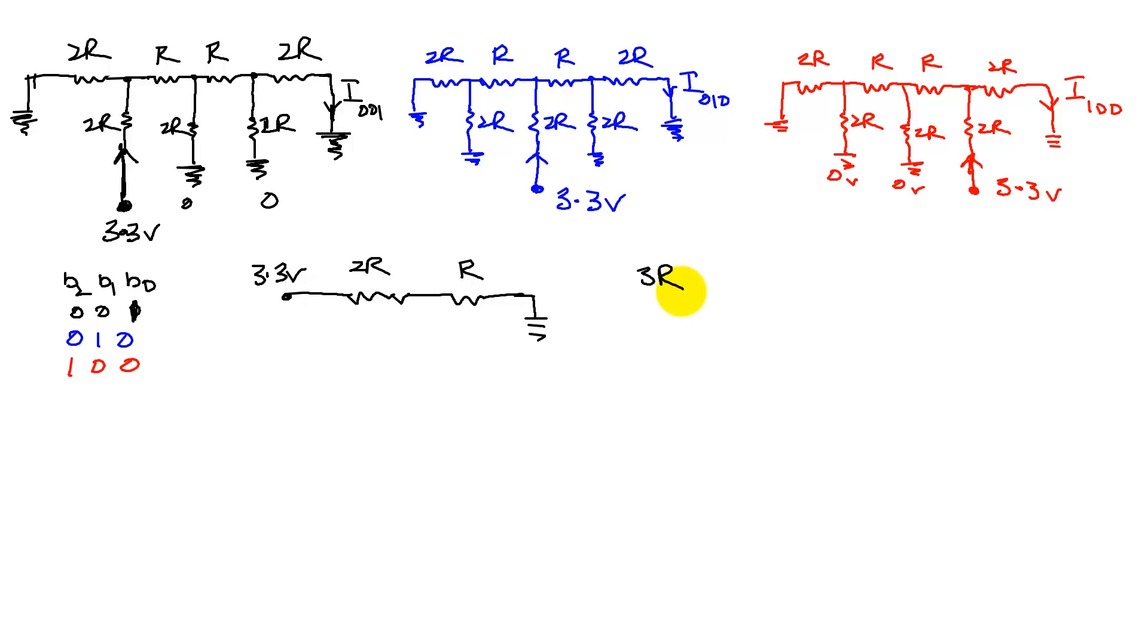It's just a matter of combining them based on what you already know about series and parallel resistors. So if you did that, then we can find out what the current is.